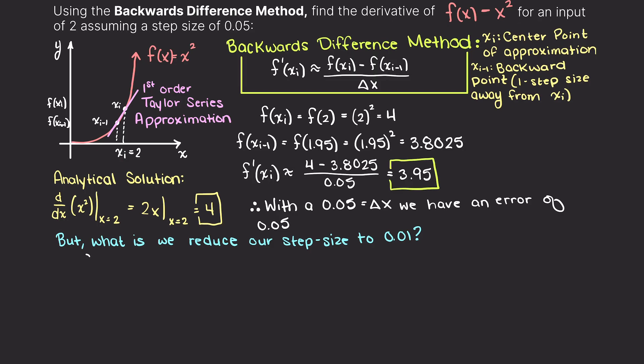Now, let's assume a step size of 0.01. Doing so, our f(xi) will remain the same. We just need to recalculate xi minus 1, which is going to be evaluated at 1.99, and this results in 3.96.